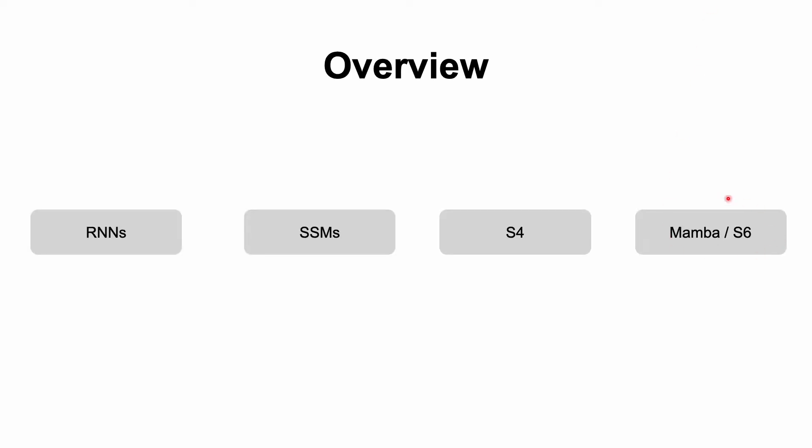Before we talk about Mamba or S6, we have to have a good foundation. Mamba was built based off of RNNs, SSMs or state-space models were built based off of RNNs, S4 improved on those SSMs, and Mamba improved upon the S4 model.